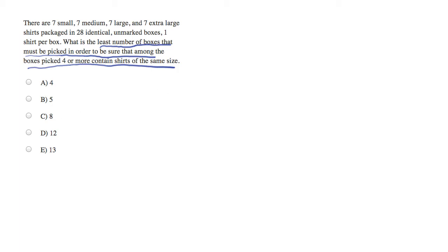Well, one way that we can keep track of this is by doing the worst job we possibly can at matching shirts. If we're doing the worst job we possibly can at matching shirts, as soon as we have four that match, we know that's the smallest number of boxes that could have been picked to ensure that was the case.